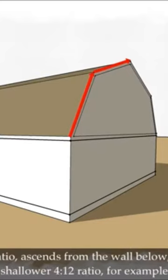A steep slope, such as a 16:12 ratio, ascends from the wall below. It then changes pitch to a much shallower 4:12 ratio, for example.